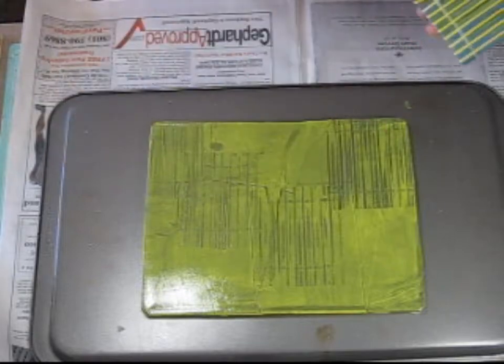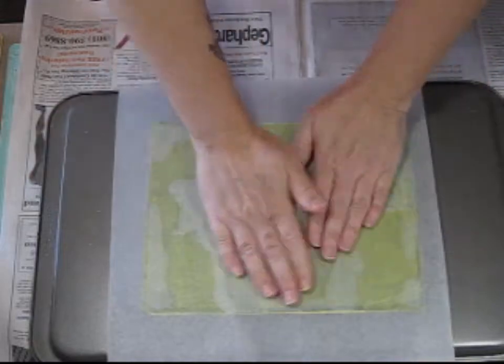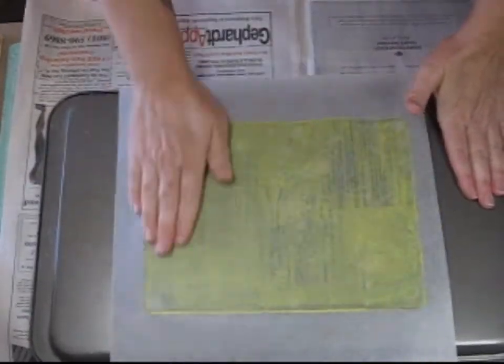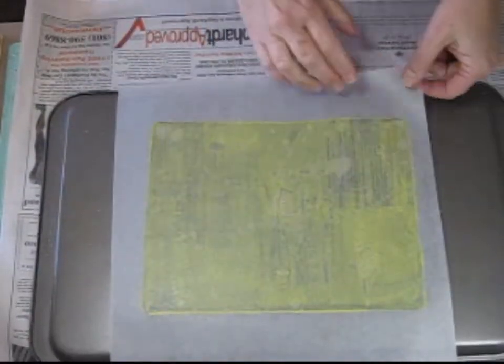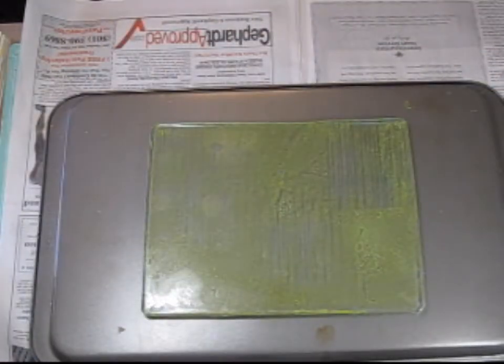So then you just take some of your textures and start pushing it gently into the jelly plate. When you have a texture you like, take your paper and rub it down and lift it off and you start building different textures.